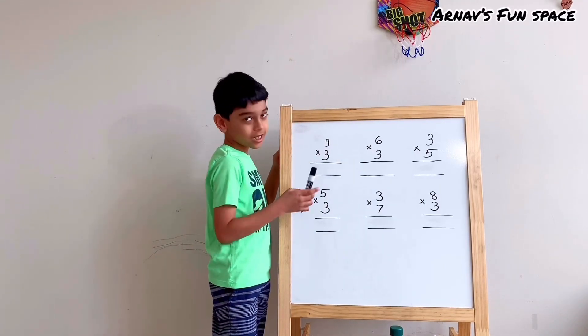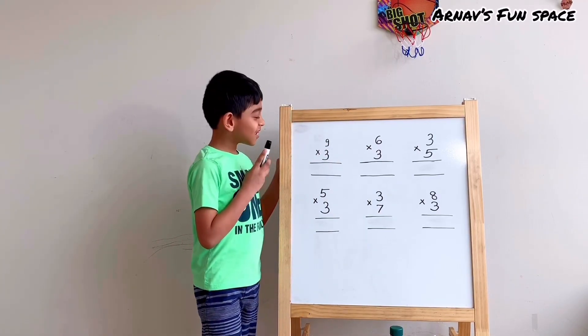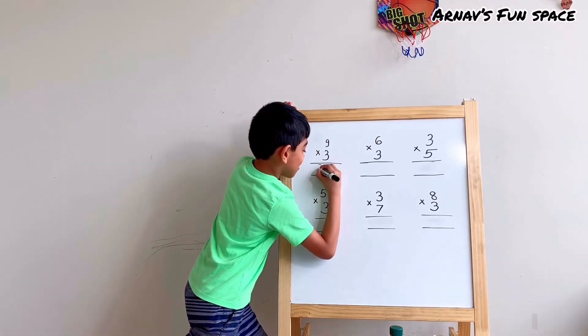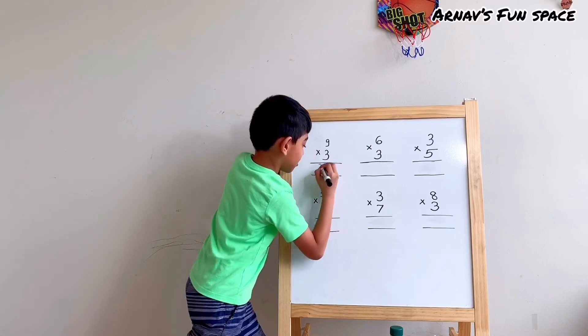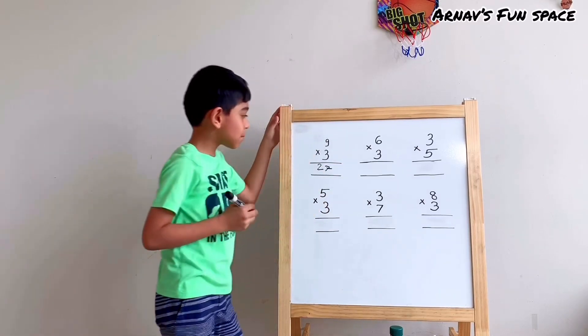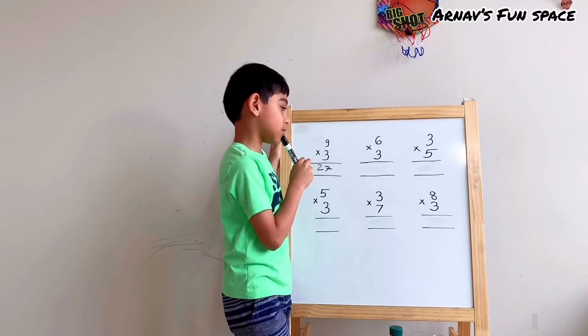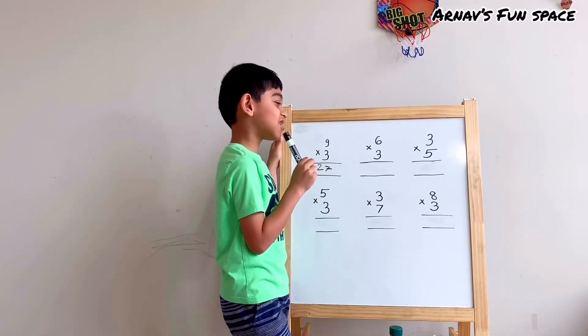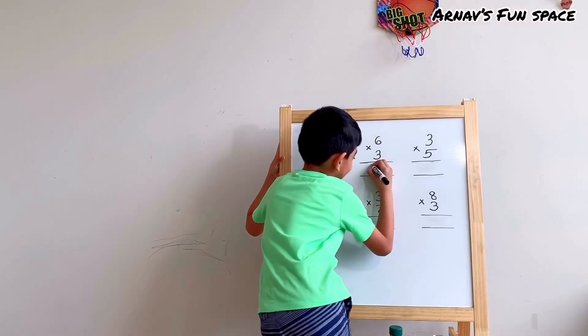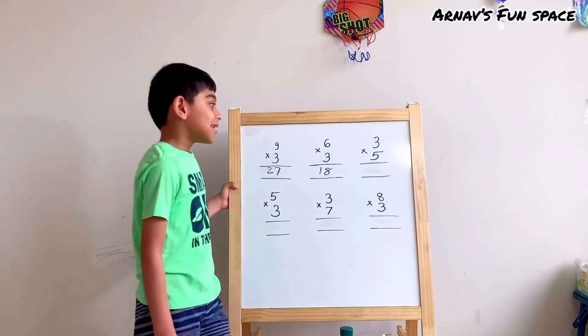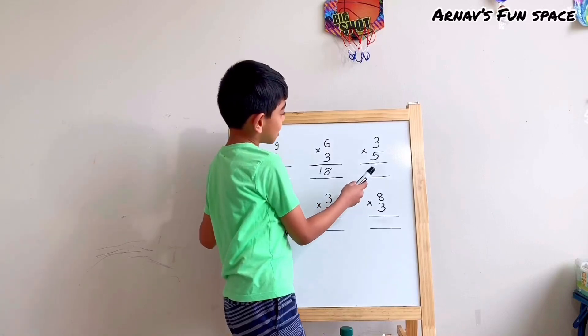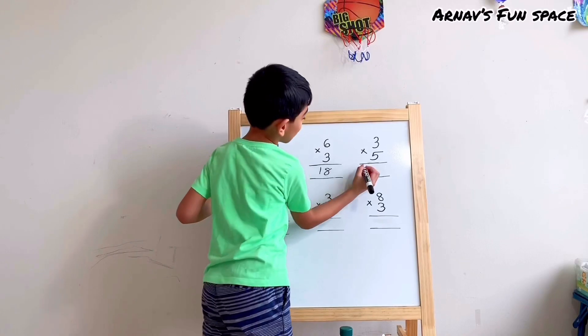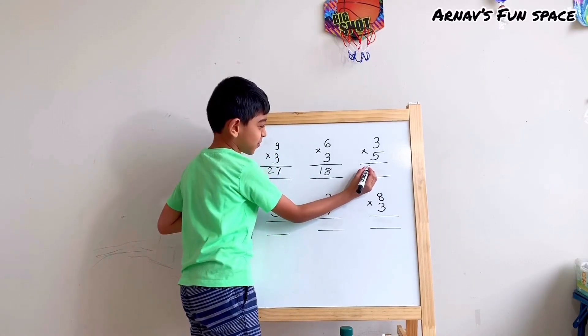Let's first do 9 times 3. Yeah, 27. Now I have to go next to 6 times 3. 6 times 3, 6 times 3. Aha, 18. The next question is 3 times 5. 3 times 5 is 15.